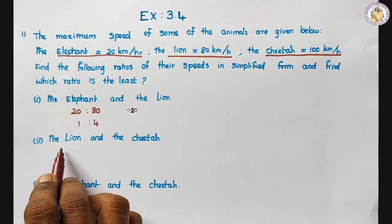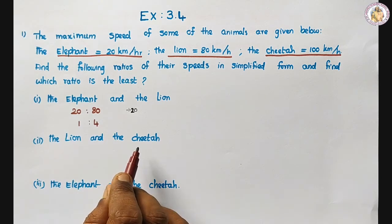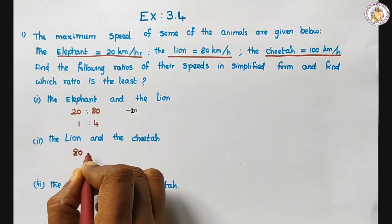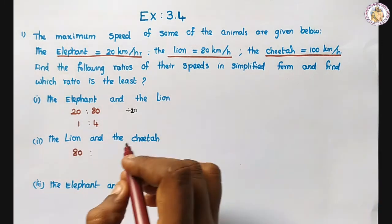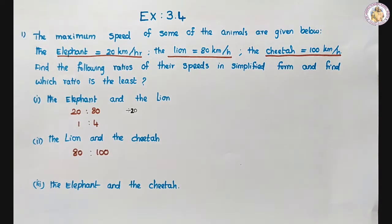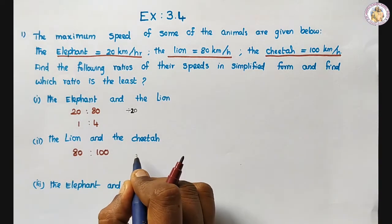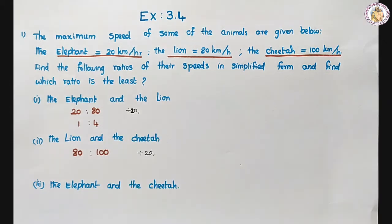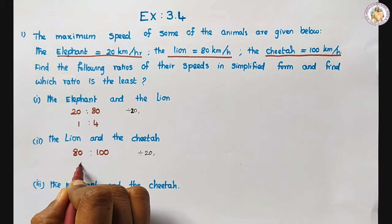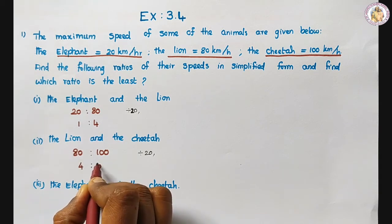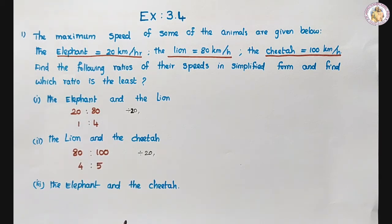Next one: the lion and the cheetah. Lion speed is 80 and cheetah speed is 100. Both are cancelled by 20. Four 20s are 80, five 20s are 100. So 4 is to 5 is the answer.